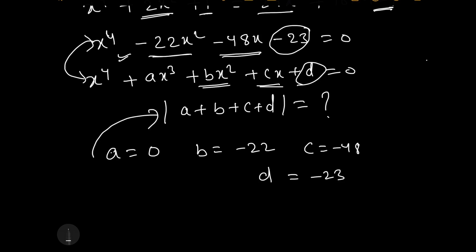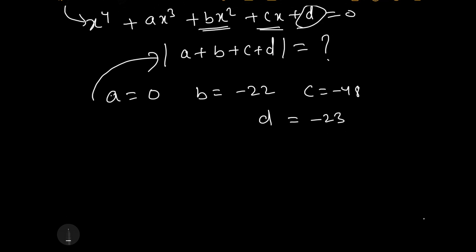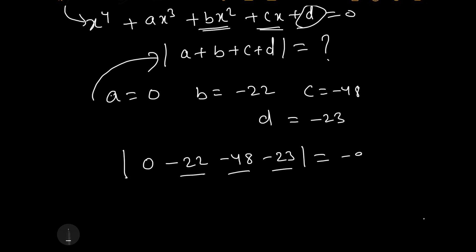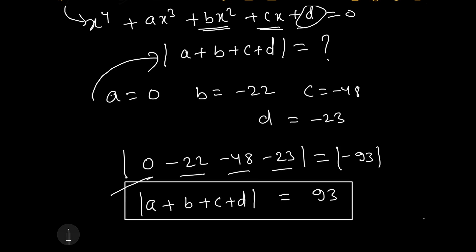To find the value of modulus of a plus b plus c plus d, we substitute: 0 plus (minus 22) plus (minus 48) plus (minus 23) equals minus 93. The modulus of minus 93 is 93. Therefore the value of modulus of a plus b plus c plus d is equal to 93, and this is our required answer.